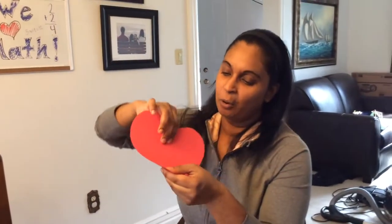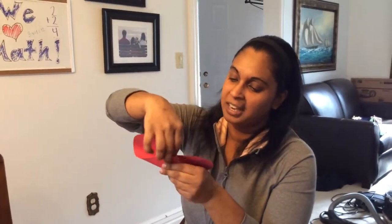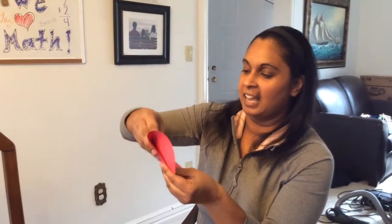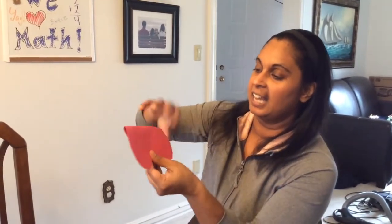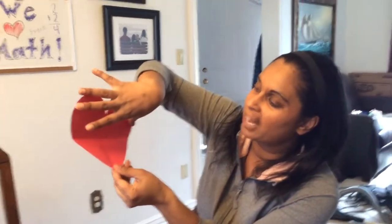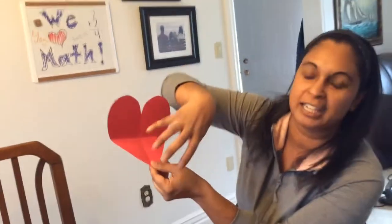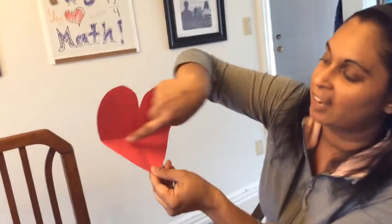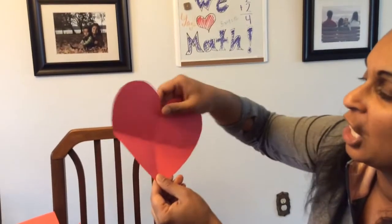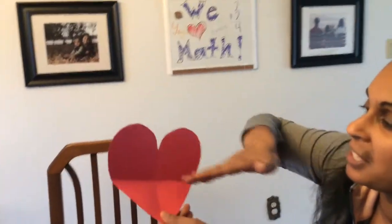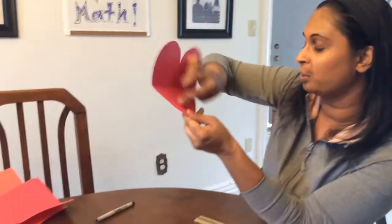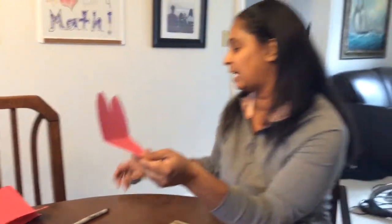But if I fold it horizontally, making a side to side line in the middle, I can see that the top of my heart does not match the bottom of my heart. If I look on both sides of that line, they don't match. So this horizontal line is not a line of symmetry on the heart — only the vertical line.